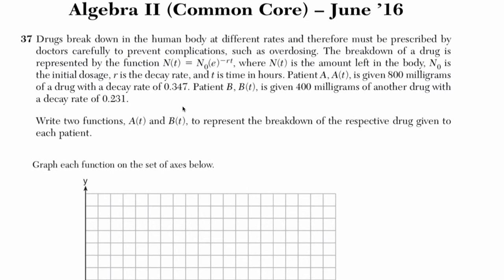Okay, so what do we know here? We're told a bunch of stuff. So we're told that this is a problem about drugs that break down in the human body, and we're told that drugs break down at different rates, and therefore must be prescribed by doctors carefully to prevent complications, such as overdosing. The breakdown of a drug is represented by this function here. So I'm going to underline this, and then let's talk about this real quick.